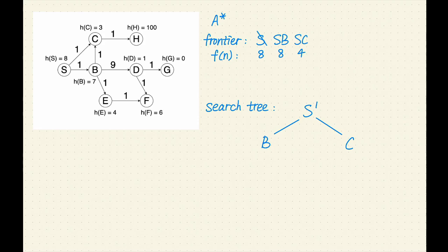Next, SC has the lowest F value of 4. Let's remove SC from the frontier. C is not a goal, let's expand it. C has one successor, H. For path SCH, the cost is 2 and the heuristic value is 100, so the F value is 102. Let's add SCH to the frontier.